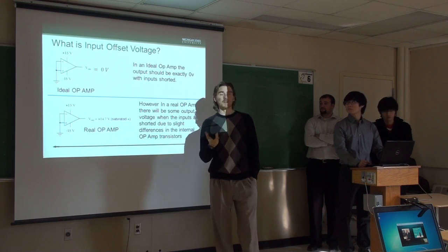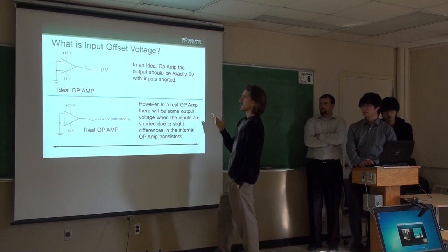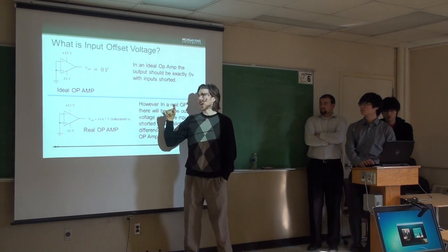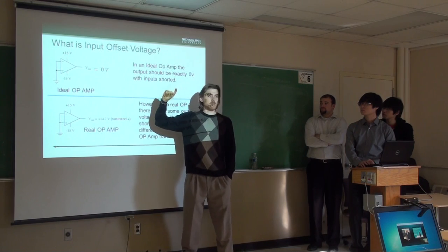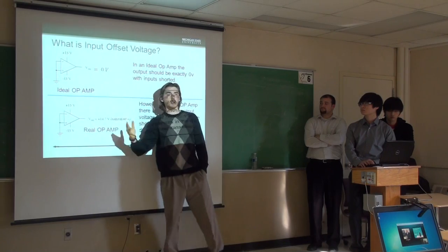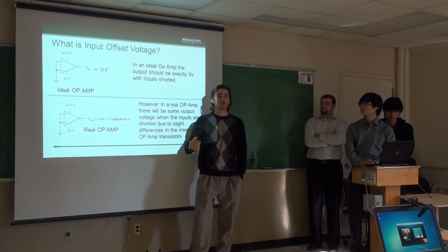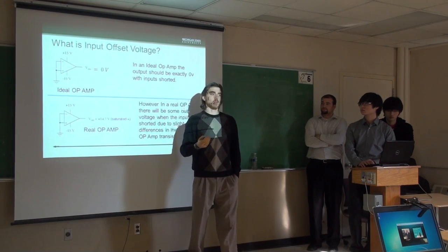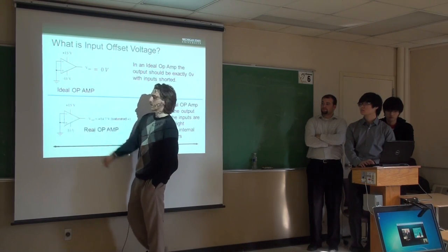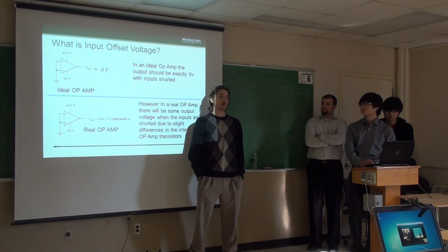So, what is input offset voltage? All op-amps are differential amplifiers — they amplify the differential voltage between the inputs. In theory, if you short the inputs together, you should have zero output voltage because there's no difference in the inputs. But in reality that's not the case because of input offset voltage. If you take a real op-amp like the 741 and short the inputs together, it's likely the output will go to saturation at one of the supply rails.